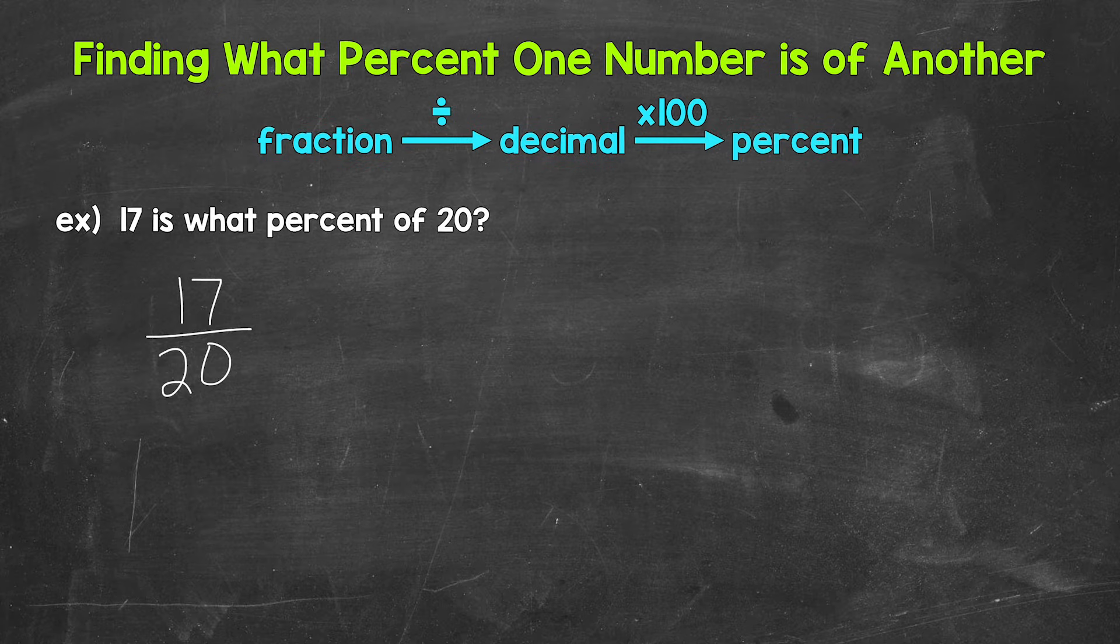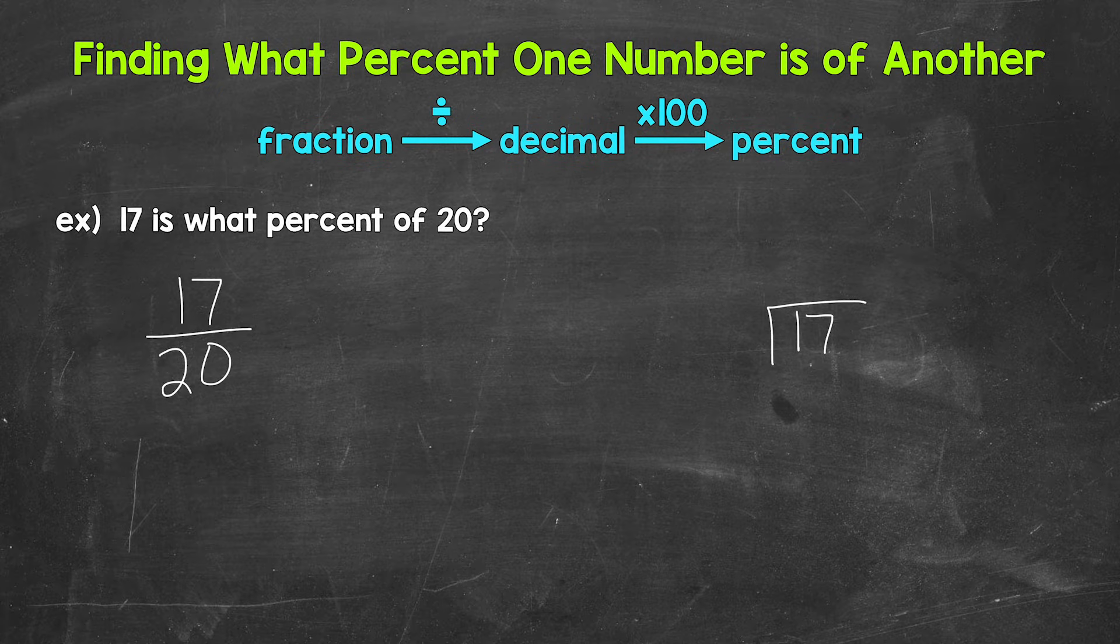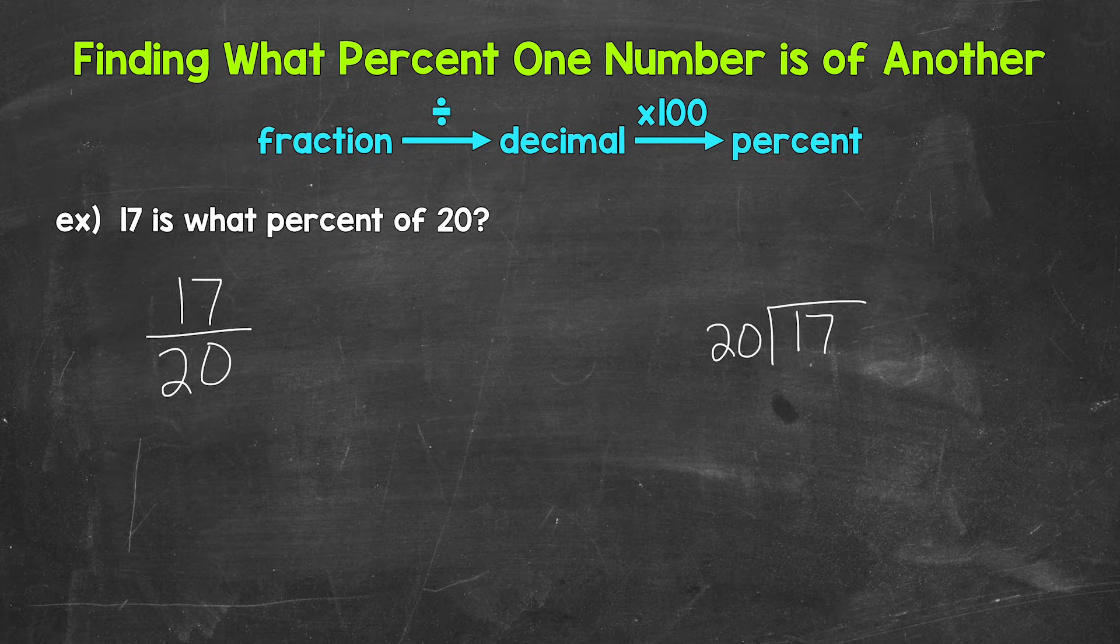Let's do this division off to the side by hand. So 17 divided by 20. Let's start with 17 divided by 20. How many whole groups of 20 in 17? How many 20s in 17?